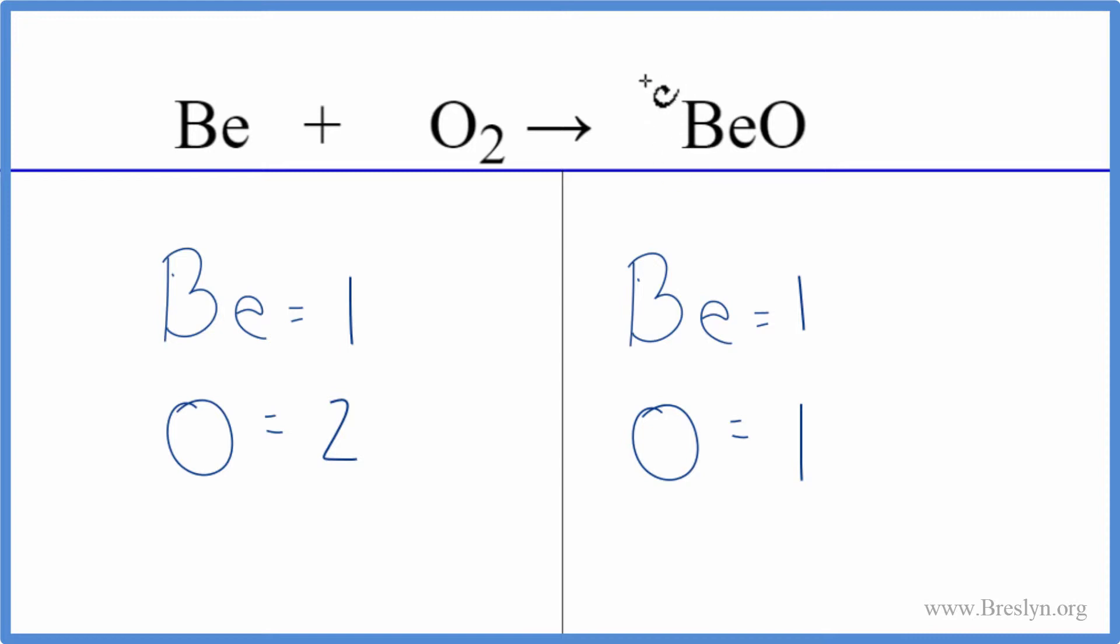We can change these coefficients here in front of the atoms to make the equation balanced. And we can do that by putting a two in front of the beryllium oxide, the BeO.